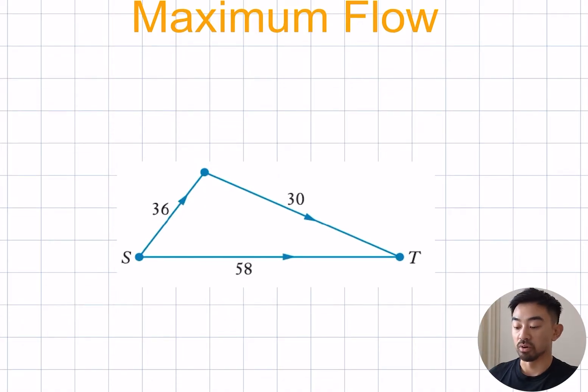So as the name suggests, maximum flow is basically about finding what's the maximum amount of things that can be within a certain network at any one time and here you can see I've got three edges that make up this network from s to t.